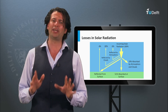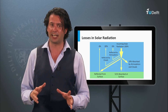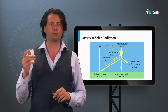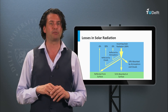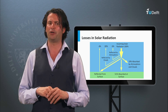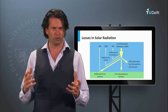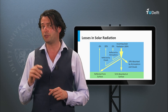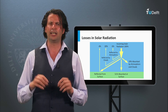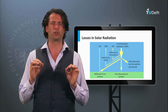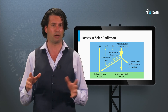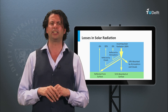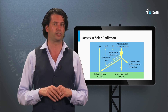On average, around 20% of the solar irradiation is reflected by clouds, 6% by the molecules in the atmosphere, and 4% by the Earth's surface, so in total 30% is lost due to reflection. 20% of the irradiation is lost due to absorption by clouds, particles and molecules in the atmosphere. 51% of the irradiation is absorbed at the Earth's surface.